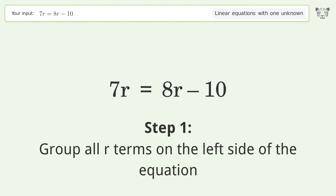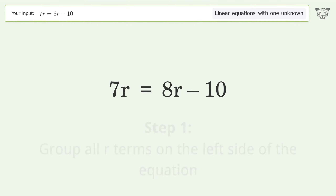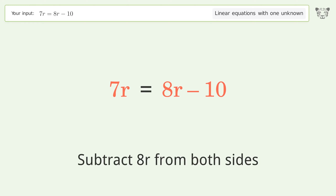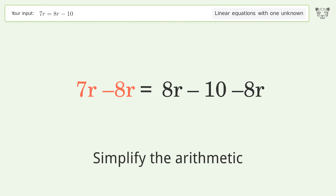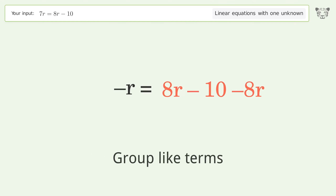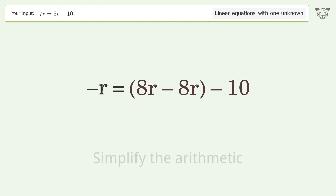Group all r terms on the left side of the equation. Subtract 8r from both sides. Simplify the arithmetic. Group like terms.